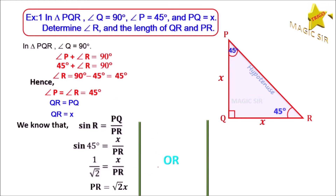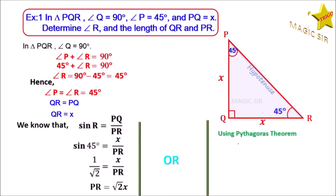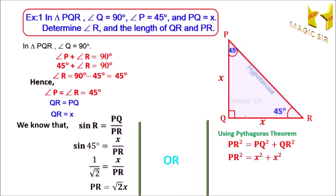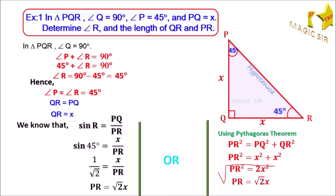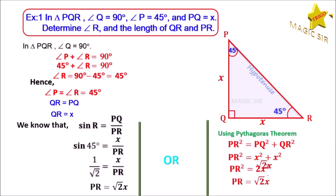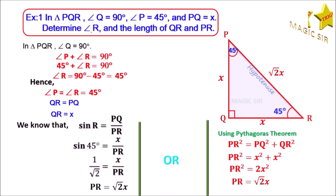Now look at the second method to find the length of hypotenuse PR. Here we can use Pythagoras theorem. PR square is equal to PQ square plus QR square, where PQ is equal to X and QR is equal to X. So PR square equals X square plus X square, therefore PR square equals 2X square. Taking square root of both sides, we get PR equal to root 2X. We put PR equal to root 2X in the figure. Hence, angle R is equal to 45 degrees, QR is equal to X, and hypotenuse PR is equal to root 2X.